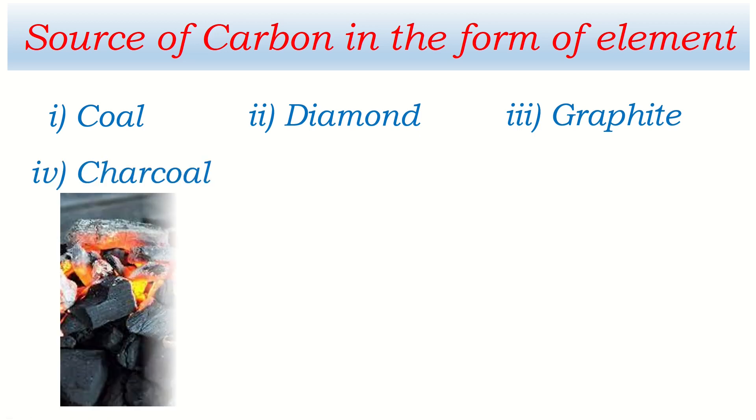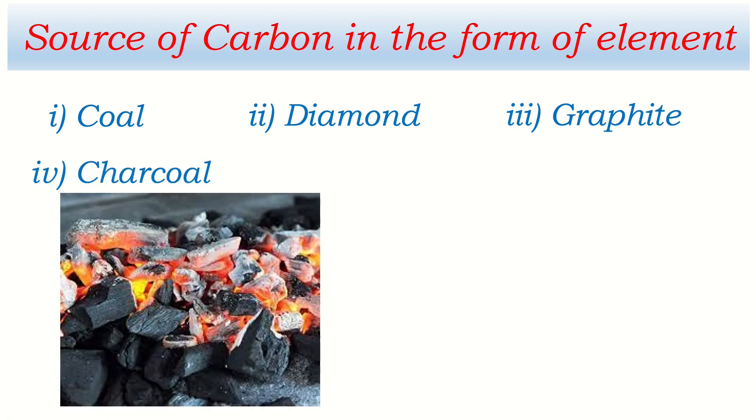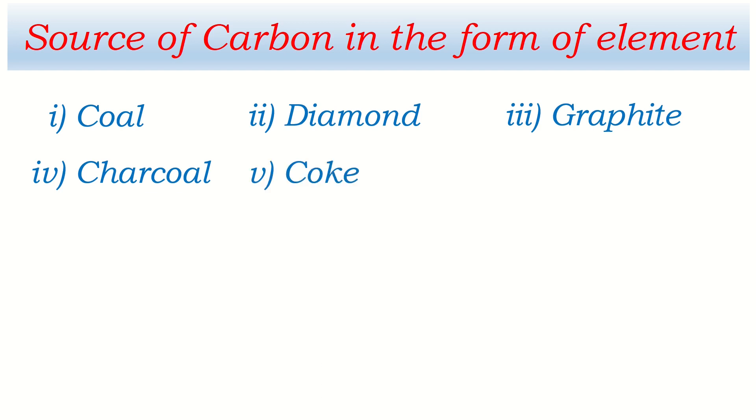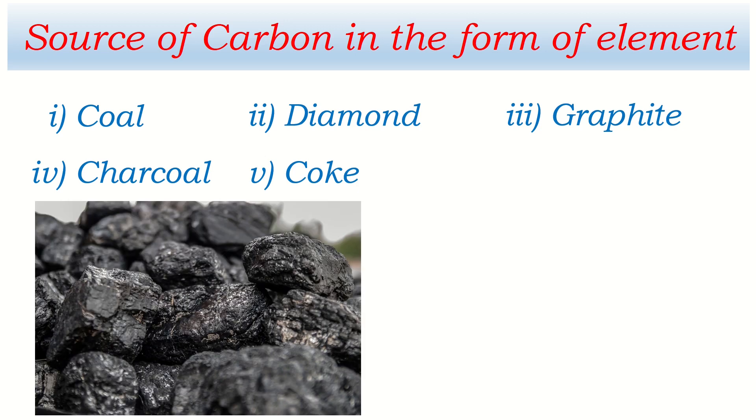Another is charcoal. Charcoal means the remaining part of burnt out wood which is very light and black in color. And another is coke. Coke is made by destructive distillation of coal and it is heavy also.